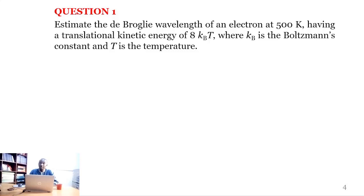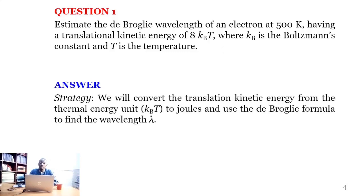The first question says: estimate the de Broglie wavelength of an electron at 500 Kelvin, having a translational kinetic energy of 8k_B T, where k_B is the Boltzmann constant and T is the temperature. What we are going to do firstly is to convert the translational kinetic energy from thermal energy units to joules.